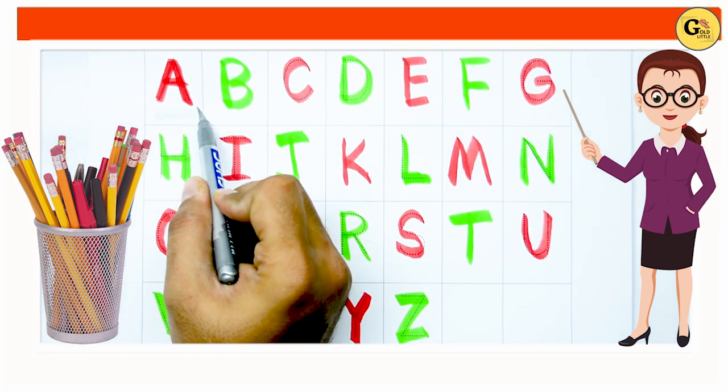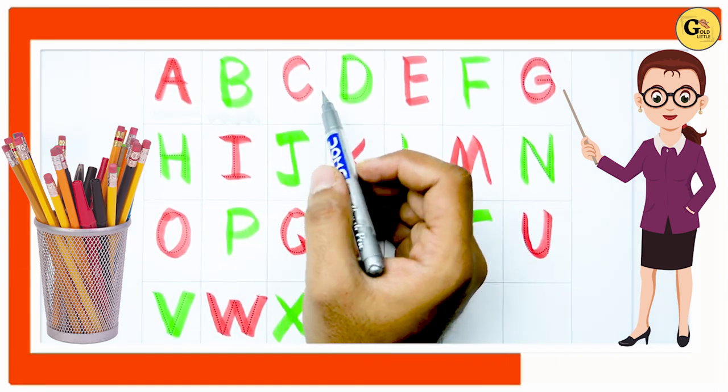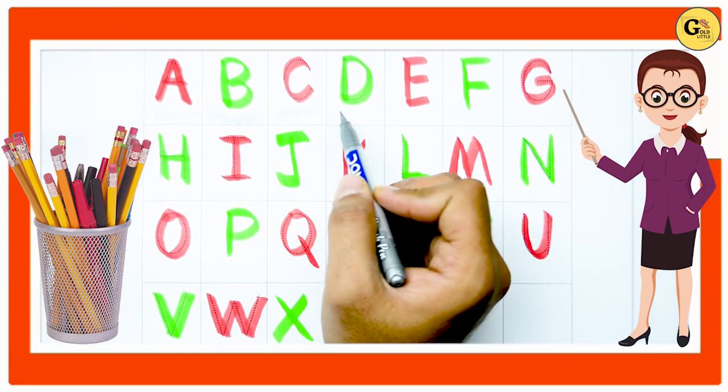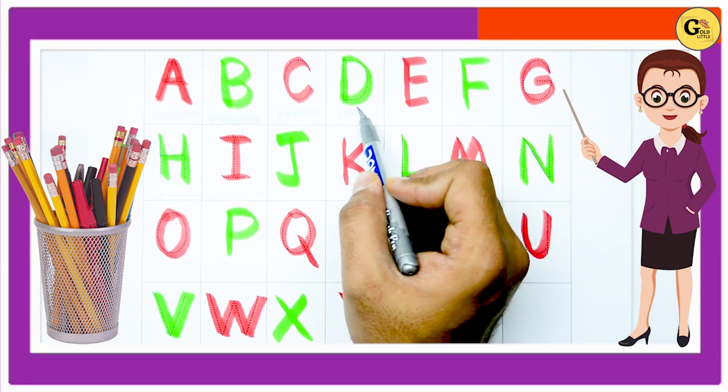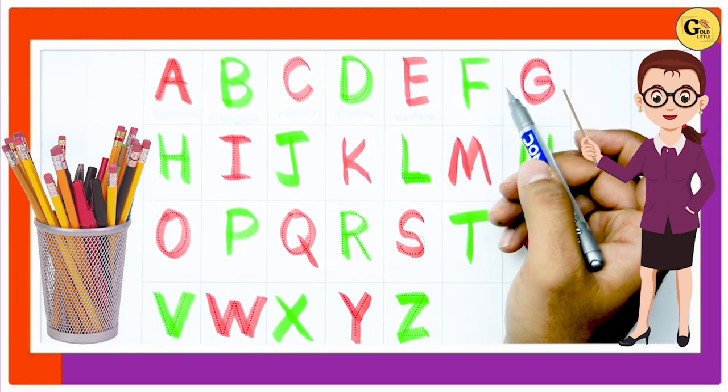It's A, A for Apple. B, B for Ball. C, C for Cat. D, D for Dog. E, E for Elephant.